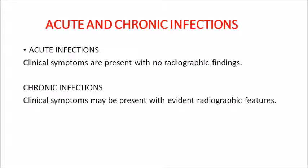Coming to the radiographic features of acute and chronic infection: acute infections are of short duration, with clinical symptoms and pain. They will be tender on percussion and palpation. There will be no or mostly rare radiographic findings. Chronic infections may or may not have clinical symptoms; they will not be tender on percussion, but there can be evident radiographic features, for example in chronic abscess. Always remember: radiographic features are evident in chronic infections; clinical symptoms are more evident in acute infections.